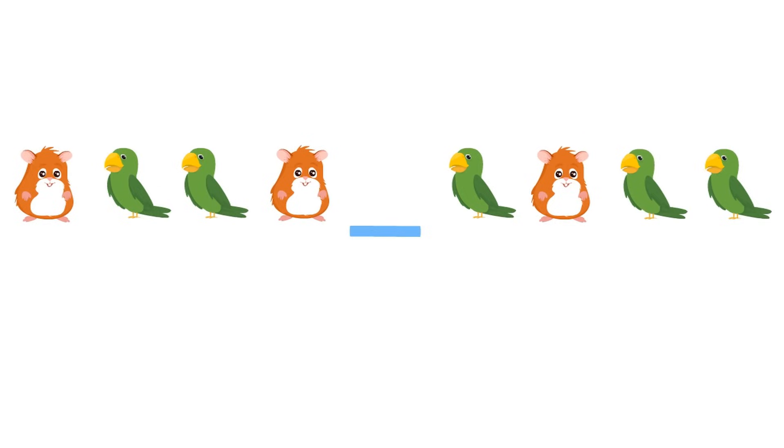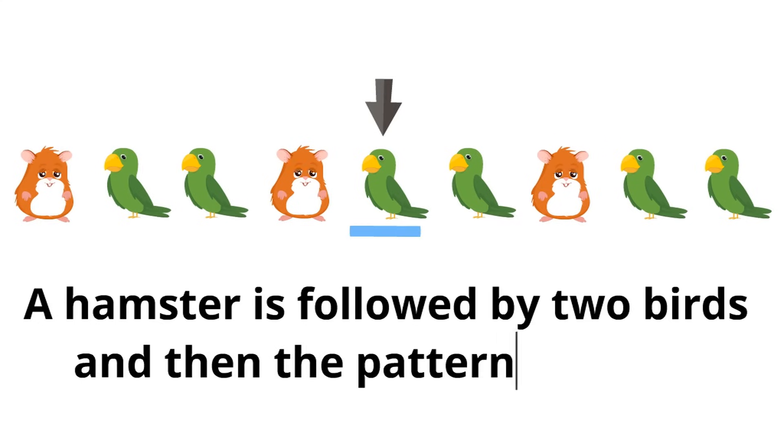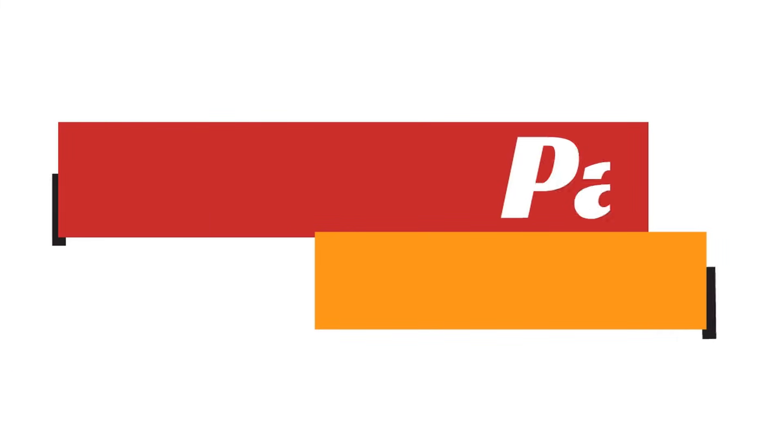Let's complete this pattern. Just by looking at this pattern, what do you think goes in this spot? Yeah, a bird. A bird goes here. Now, how do we know that a bird goes here? Well, to crack the code and figure out the pattern, we have to look at the clues. We see a hamster first, followed by two birds, then another hamster, and two birds, and it goes on and on. The rule for this pattern, then, is that a hamster is followed by two birds, and then the pattern repeats. Patterns repeat.